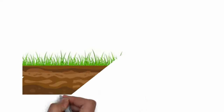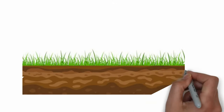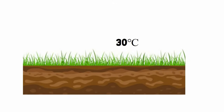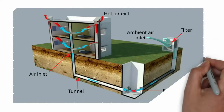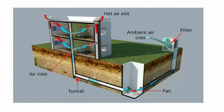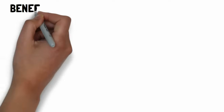The temperature below the earth is constant throughout the year. By comparing air temperature and ground temperature, the difference is a minimum of 2 to 6 degrees Celsius. Using this principle, the Earth Air Tunnel is used for preheating and cooling, which consists of a network of pipes buried at a reasonable depth below the ground.